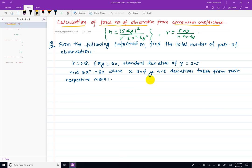I am going to calculate using the correlation coefficient formula: r is equal to summation xy divided by n sigma x into sigma y. I will further derive the formula so that n is equal to summation xy squared divided by r squared into summation x squared into sigma y squared.